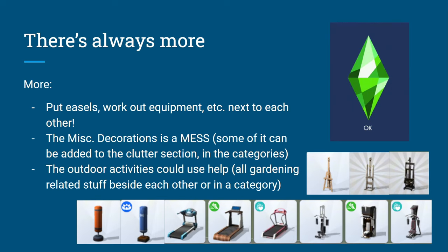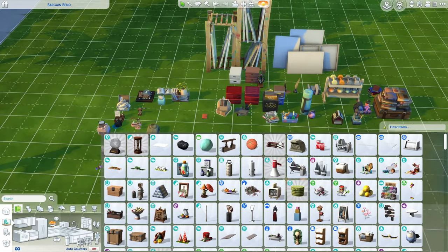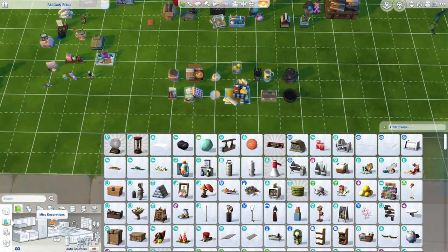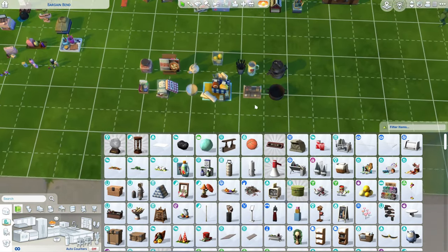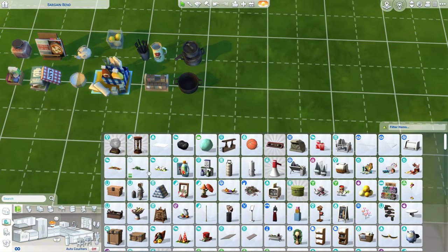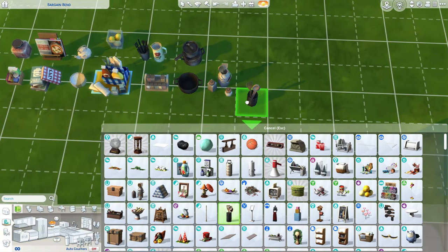A lot of the workout equipment is already together, which is nice. I'd like the punching bags together, then treadmills, then workout machines. Also, the miscellaneous decorations is a mess — some of it can be added to the clutter section. Looking at miscellaneous decorations, there's a lot of kitchen stuff: utensils, paper towels, dish rack, bread box.